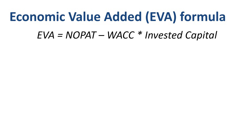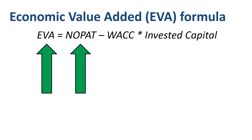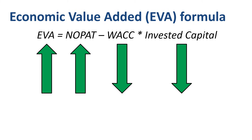How can companies improve EVA? By increasing NOPAT, decreasing WACC, or decreasing the invested capital.